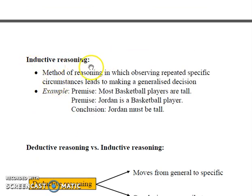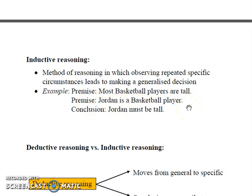Coming to inductive reasoning — it is a method of reasoning in which observing repeated specific circumstances leads to making a generalized decision. For example, consider these two premises: most basketball players are tall, and Jordan is a basketball player. It leads to a conclusion that Jordan must be tall. Although we are using the word 'most' in this sentence, we are not generalizing this to all basketball players, and this property of inductive reasoning makes it quite different from deductive reasoning.